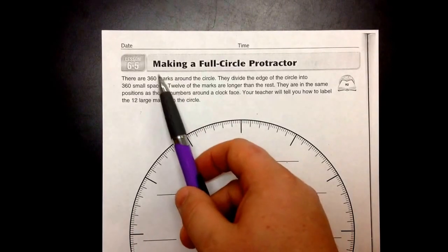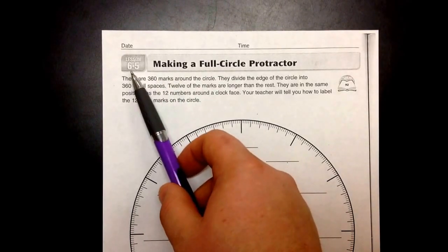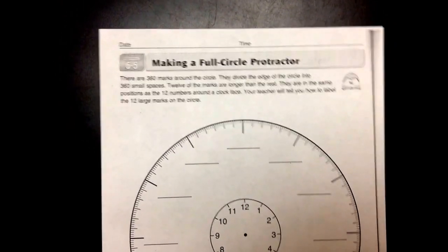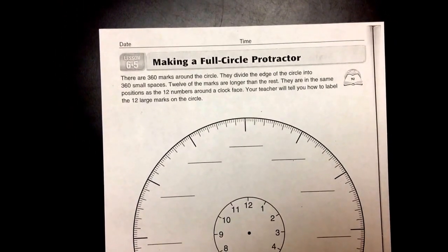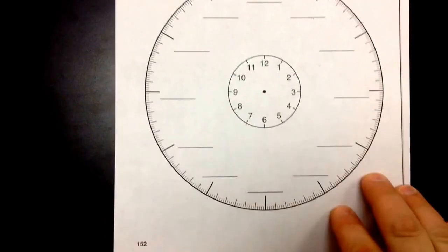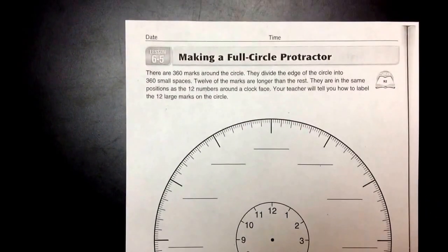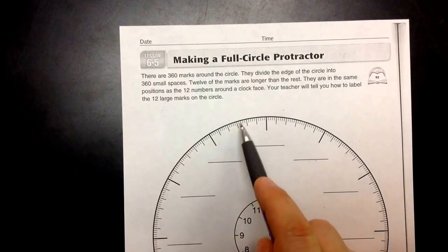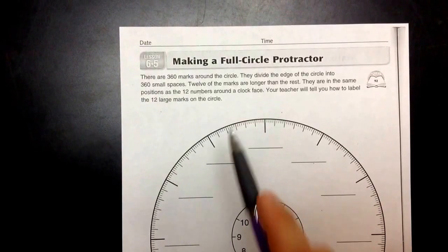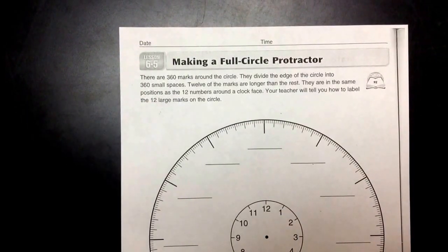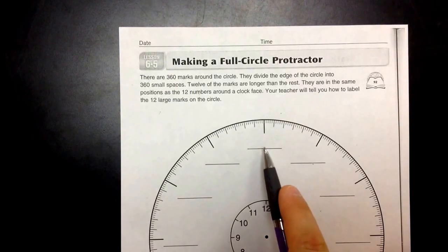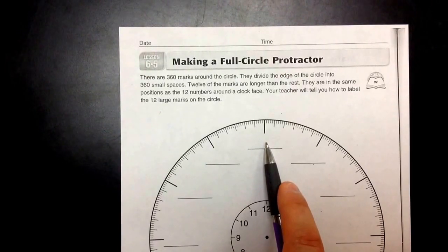Looking at lesson five from unit six of fourth grade everyday math, building a connection between the full circle protractor and a clock. The directions on page 152 tell us that there are 360 marks around this circle—these little guys here. They divide the edge of the circle into 360 small spaces. Twelve of the marks are longer than the rest. They are the same as the position of the twelve numbers around the clock face.